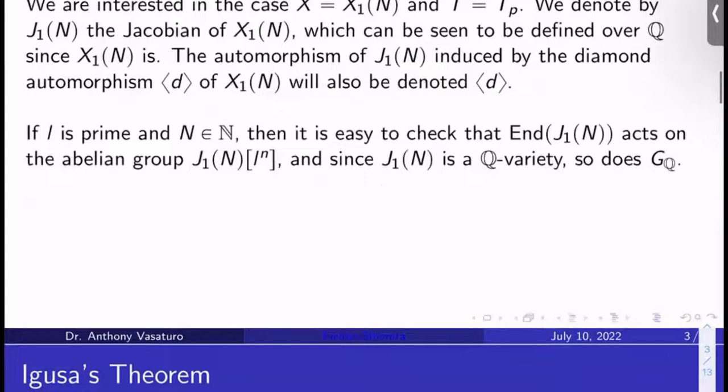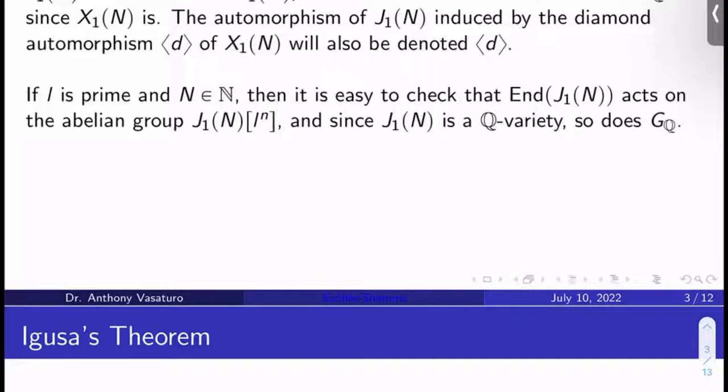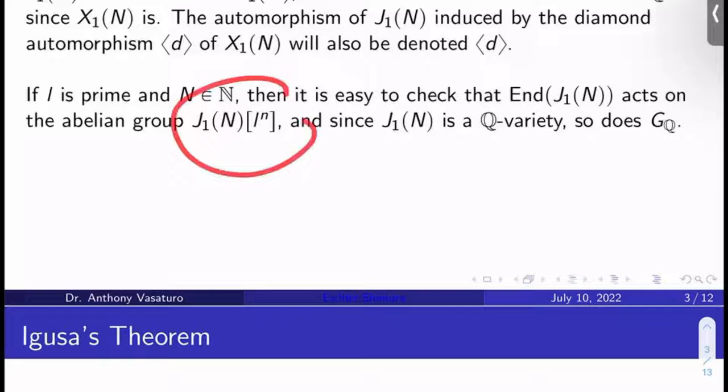Finally, a technical point lurking in the background: if ℓ is a prime and n is a natural number, it's easy to check that the endomorphisms of J₁(N) act on the abelian group given by the ℓⁿ torsion of J₁(N). In other words, these endomorphisms take torsion to torsion. And since J₁(N) is a ℚ-variety, the absolute Galois group of ℚ also acts on the ℓⁿ torsion of J₁(N) — sort of like how the Galois group acts on the torsion of elliptic curves.